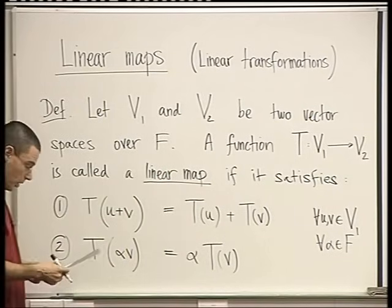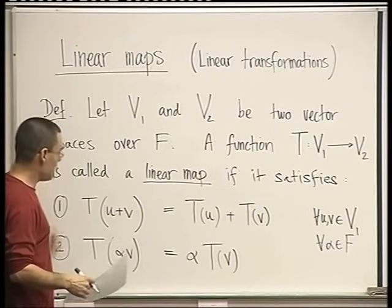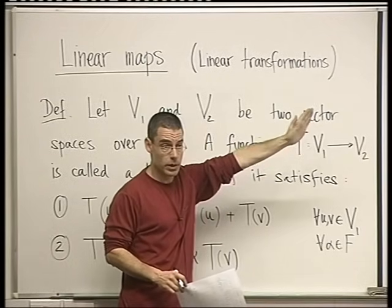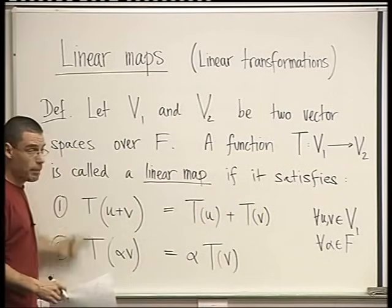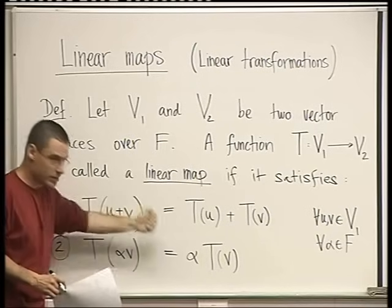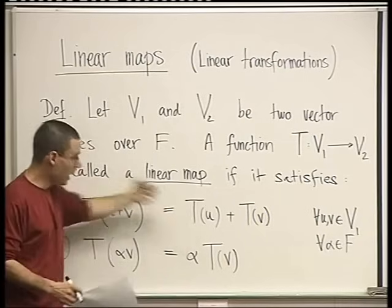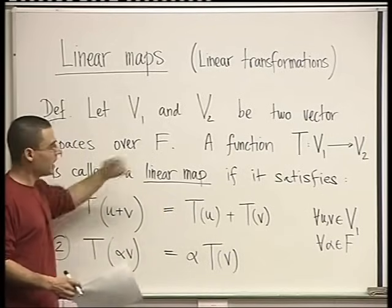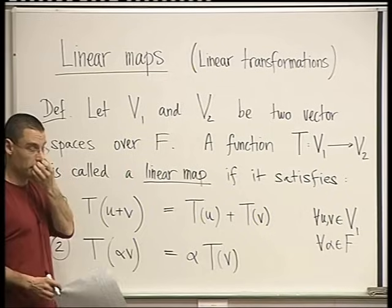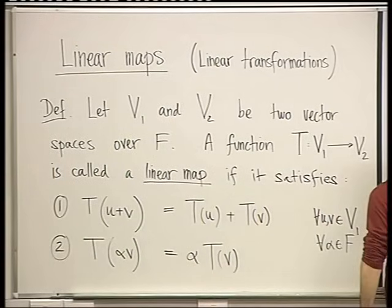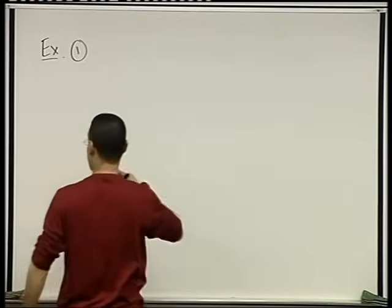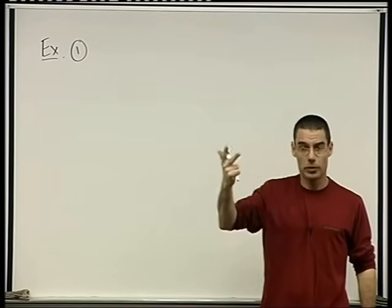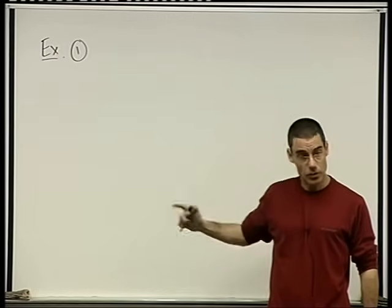So the way to think of a linear map is as a function — a rule sending elements from V1 to V2 — that satisfies these two properties, meaning it conserves the vector space structure, the linear structure, of V1 and V2. Let's do examples. In order to give an example, I need to tell you what V1 is, what V2 is, what the map T is, and then verify it satisfies the two properties.